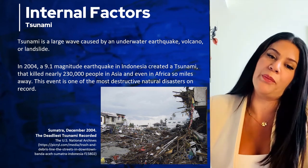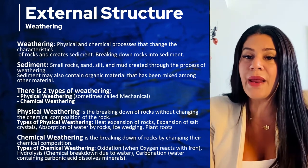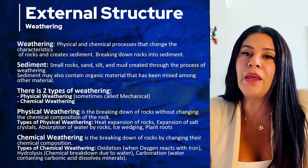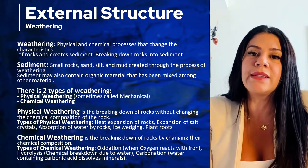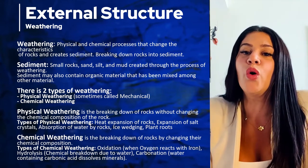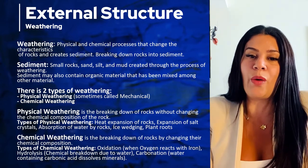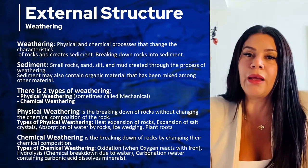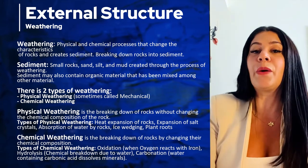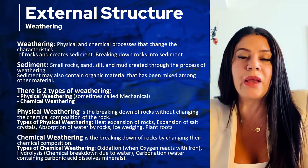Weathering is the process of breaking rocks into smaller and smaller pieces until you get something called sediment. Sediment — mud, silt, and gravel — has been worn down by the weathering process. There are two major types of weathering: physical weathering and chemical weathering. Physical weathering is the breaking down of rocks without changing the chemical composition of the rock.